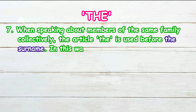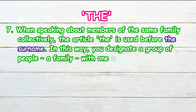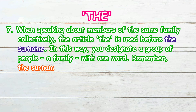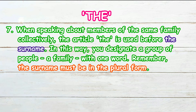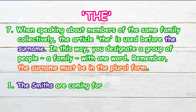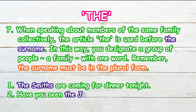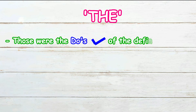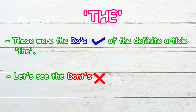When speaking about members of the same family collectively, the article 'the' is used before the surname. In this way you designate a group of people — meaning a family — with one word. Remember, the surname must be in the plural form. For example: 'The Smiths are coming for dinner tonight,' or 'Have you seen the Johnsons recently?'